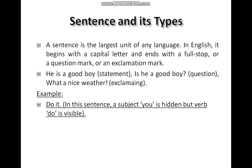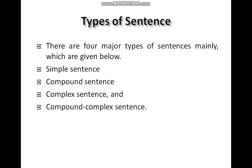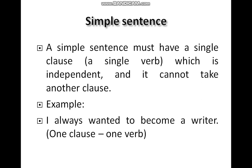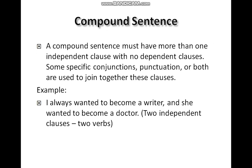For example, in the sentence 'Do it,' the subject 'you' is hidden but the verb 'do' is visible. There are four major types of sentences: simple, compound, complex, and compound-complex. A simple sentence must have a single independent clause and it cannot make another clause. For example: 'I always wanted to become a writer.'